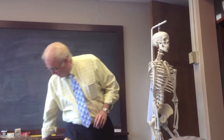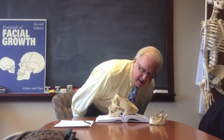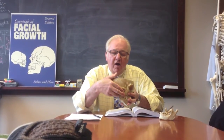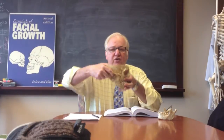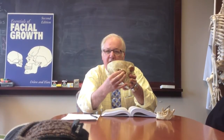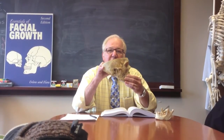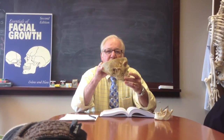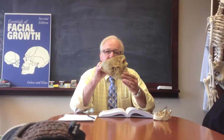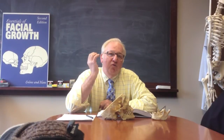Specifically, when we talk about the temporomandibular joint, I'm going to draw a cross-section showing the external auditory meatus, the head of the mandibular condyle, and the glenoid fossa. With that diagram, I want to show you the difference between rotation — which is the movement of the jaw back like this — and translation, which is the movement of the jaw forward like that. When we chew, our joints are undergoing both translation and rotation simultaneously.